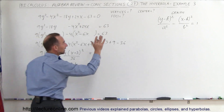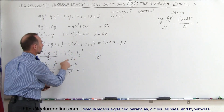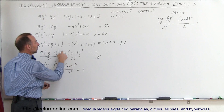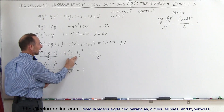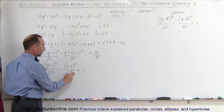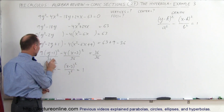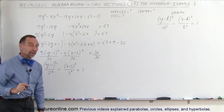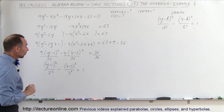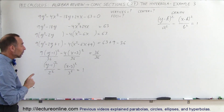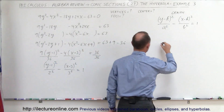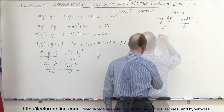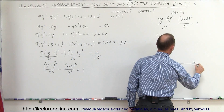Remember, 36 divided by 4 is 9, so dividing both numerator and denominator by 4 gives 9, which is the same as 3 squared. And 4 is the same as 2 squared. Now we have the equation in exactly the standard form and can go ahead and graph the hyperbola.